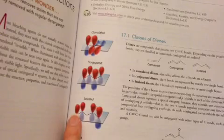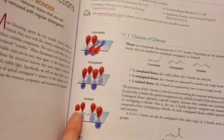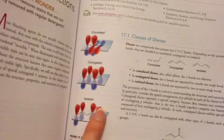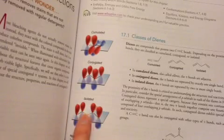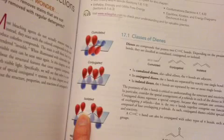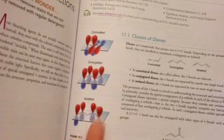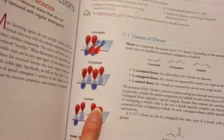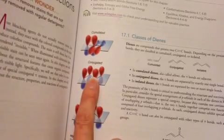And in an isolated double bond, the pi bonds are too far apart from each other to be able to interact with each other because they're separated by too many carbon-carbon single bonds. So they also are unable to interact with each other. This pi bond cannot interact with this pi bond.